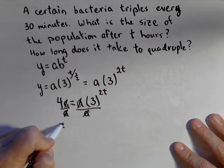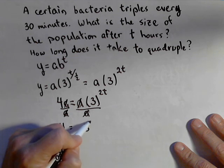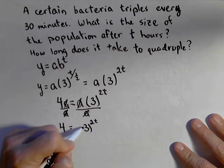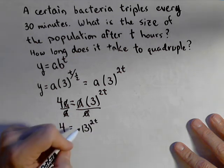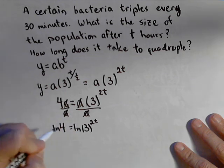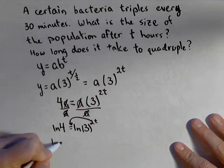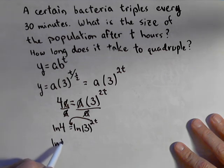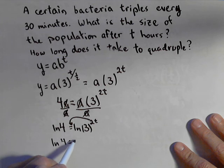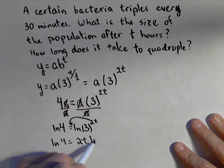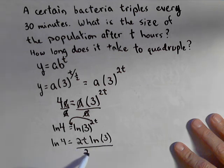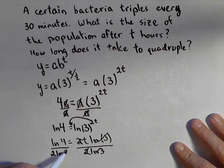So I have four equals three to the two t, and now we're at the point where we want to employ log or natural log. I'll use natural log this time, because that allows me to pull the exponent out front. So I have natural log of four equals two times t times natural log of three. Divide both sides by two natural log of three to get rid of these. So I divide this side by two ln of three.